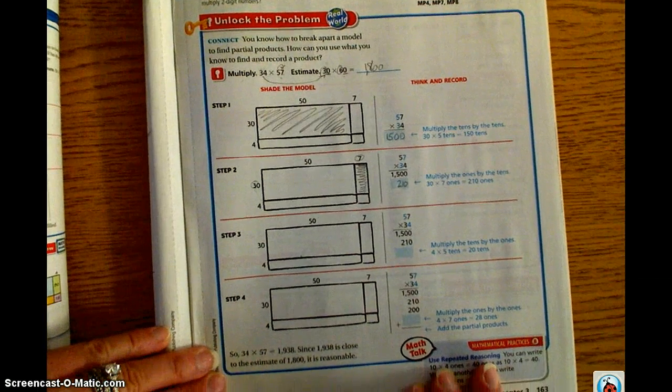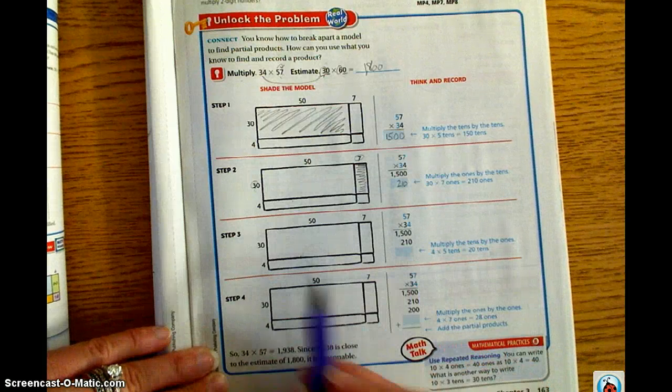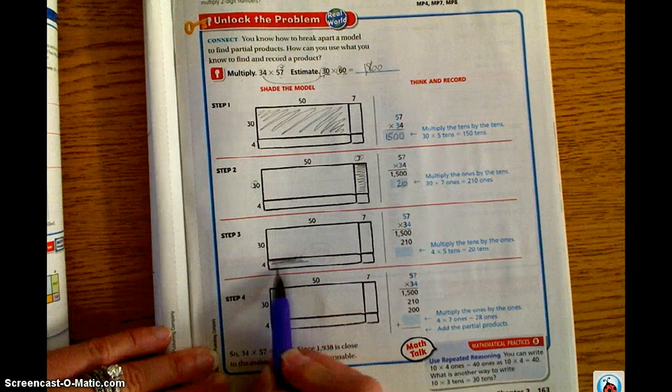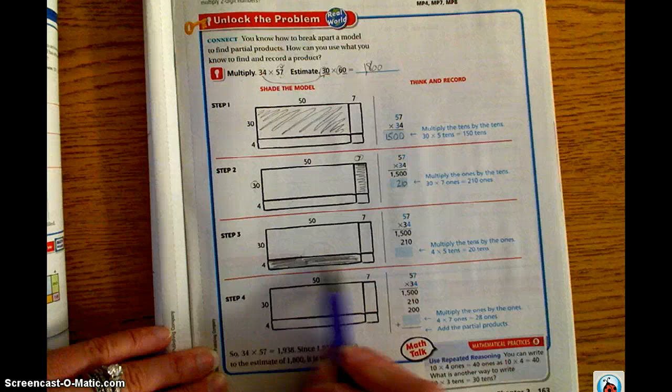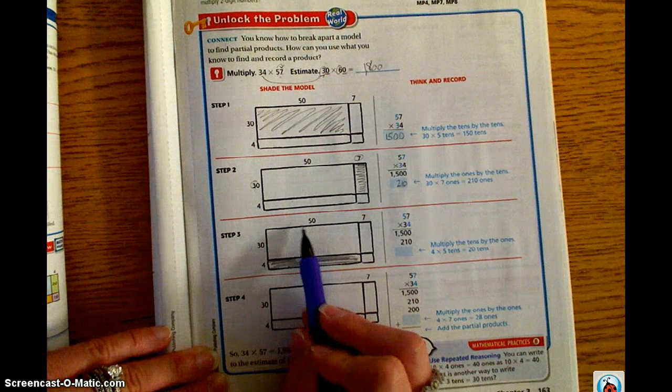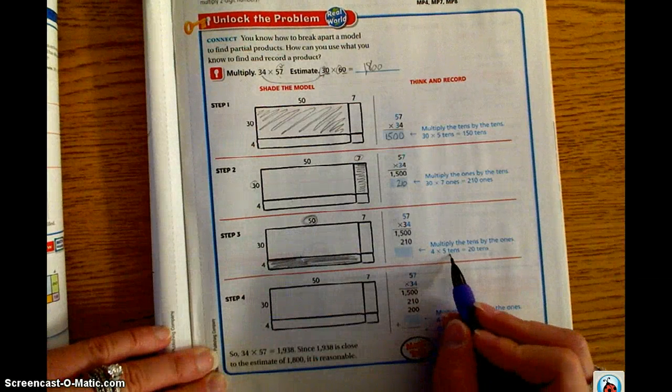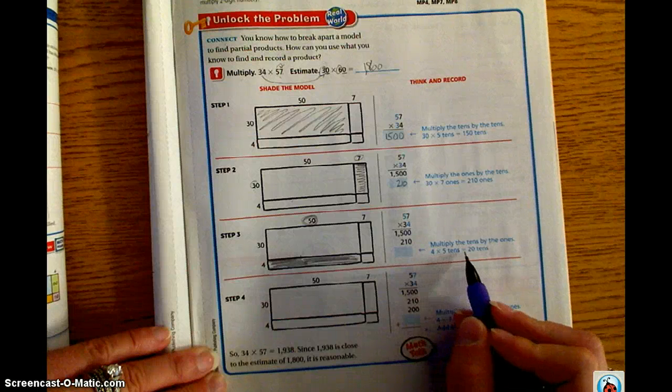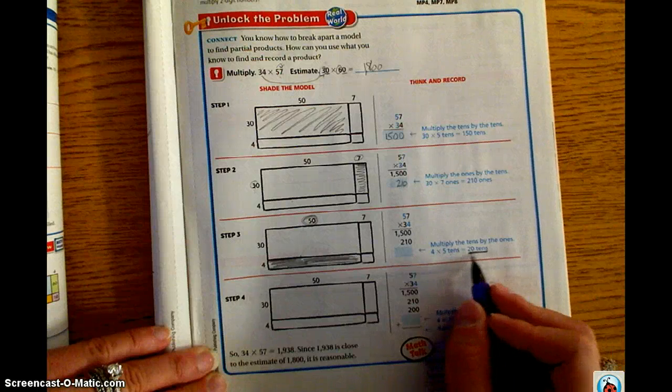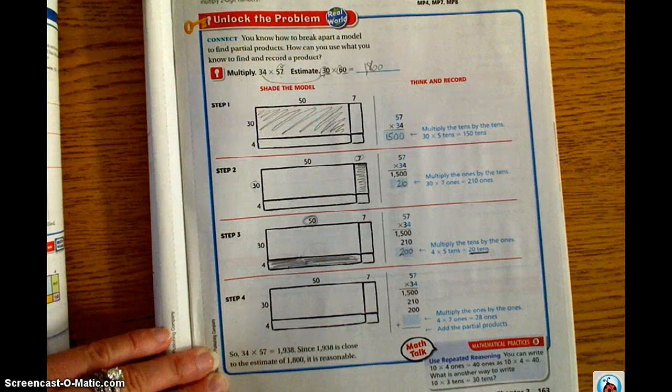Step three, we're going to multiply the tens by the ones. So we're going to start with, we're going to multiply the 4. So this is the area we're going to shade, the 4. And we're going to multiply it by the 5. Five tens. So this is 50—five tens represents 50. So 4 times 5 tens equals 20 tens. So if we have 20 tens, we know that 20 tens is actually 200. So we're going to write that as 200.